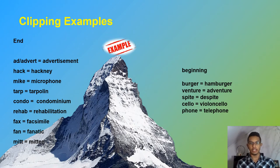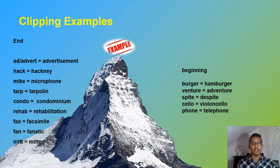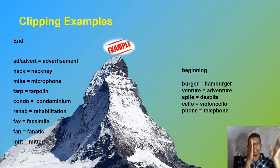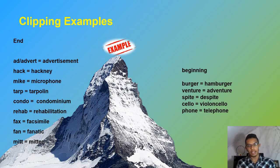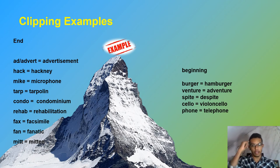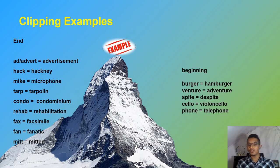We have here some examples of clipping. At the end: 'advert' from 'advertising,' 'hack' from 'hackney,' 'mic' from 'microphone,' and 'tarp' from 'tarpaulin.' We can see that we take a word and drop the rest of the information. And we also have examples at the beginning: 'burger' from 'hamburger,' 'venture' from 'adventure,' 'spy' from 'despite,' 'phone' from 'telephone.' These are clipping examples.